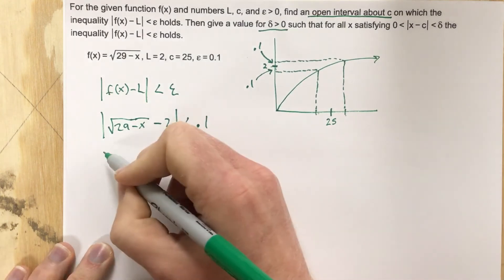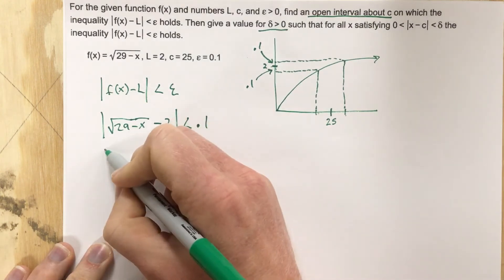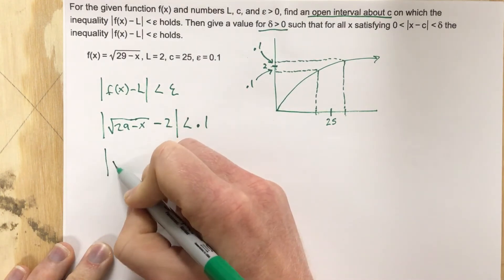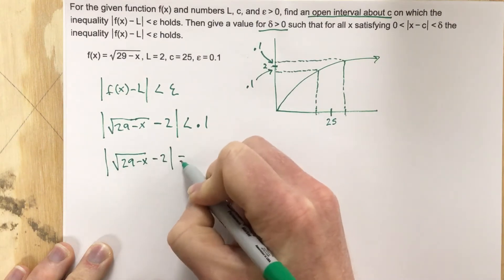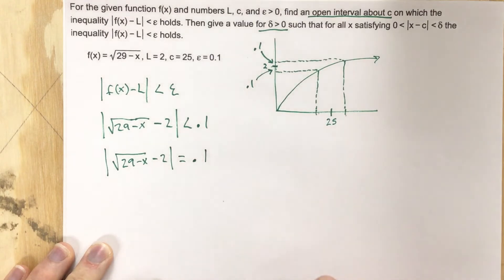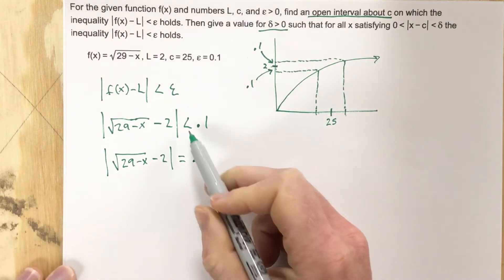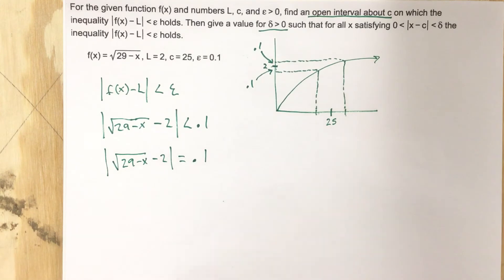I like to start these absolute value problems by saying we're going to do √(29-x) - 2 = 0.1, and then replace that and draw a number line at the end.